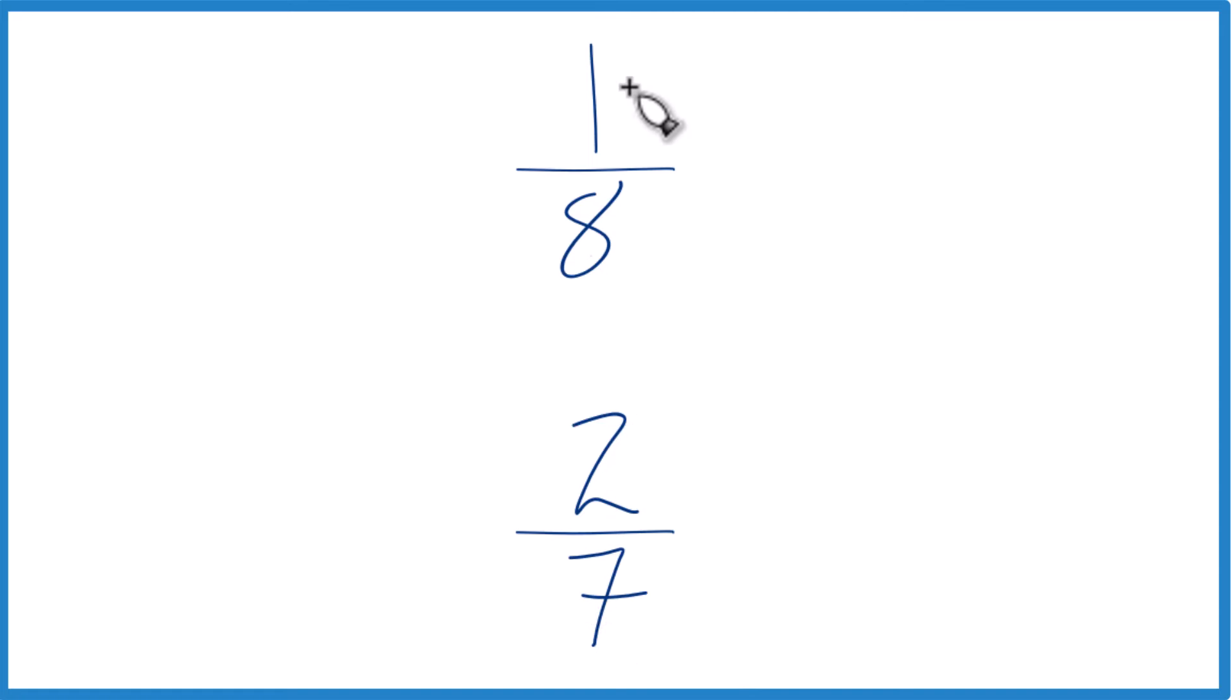One way to do it, divide 1 by 8 on a calculator, 2 by 7 on a calculator, and then you just compare the decimals. That would tell you if 1/8 is greater than, less than, or equal to 2/7.